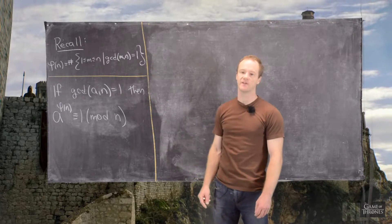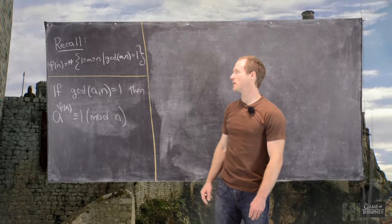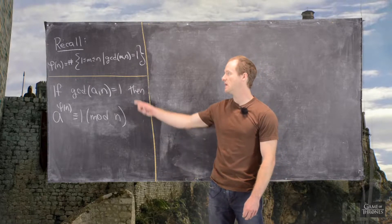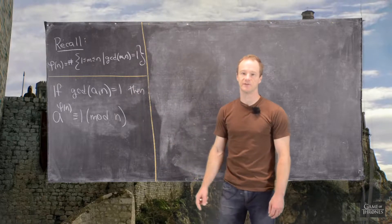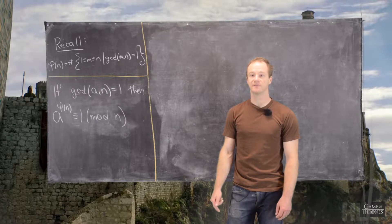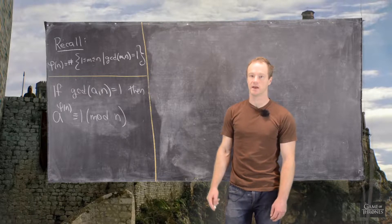So let's just recall that phi of n is the number of positive integers between 1 and n that are relatively prime to n, and then Euler's Theorem says that if you have a number a that is relatively prime to n, a to the phi of n is congruent to 1 mod n.